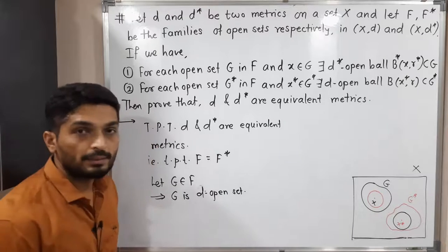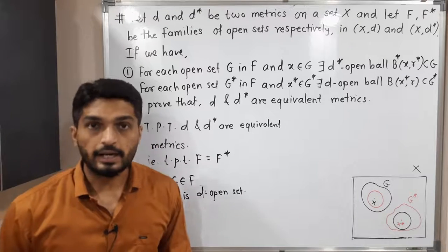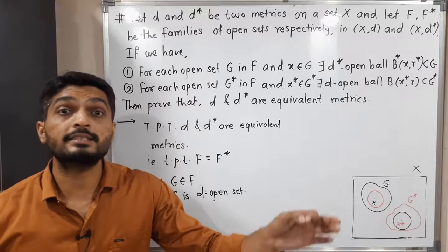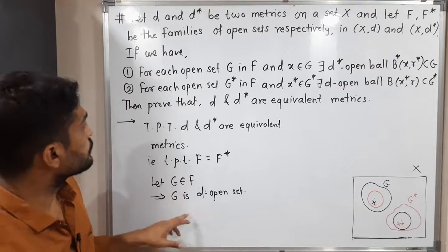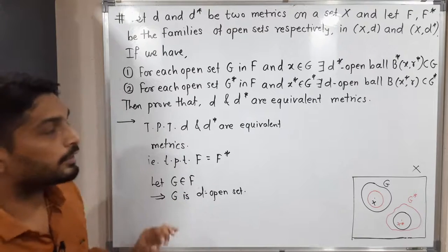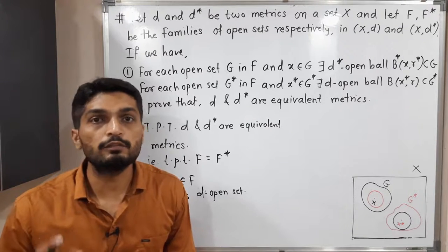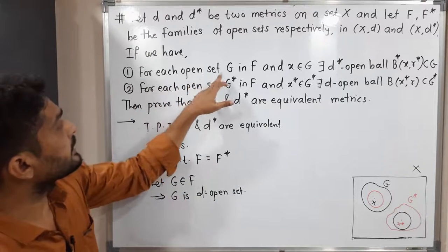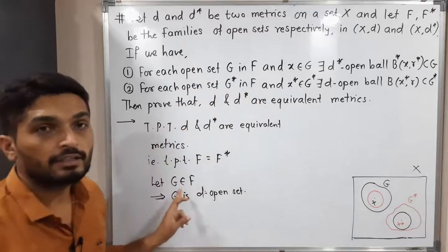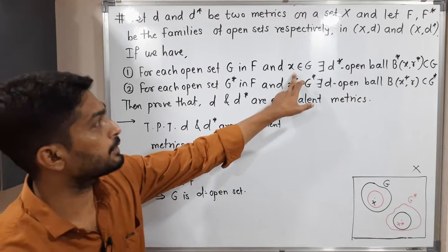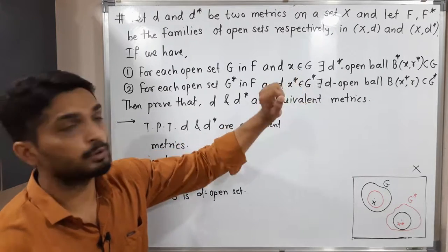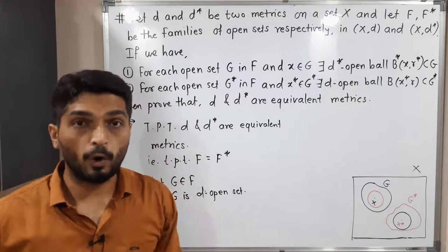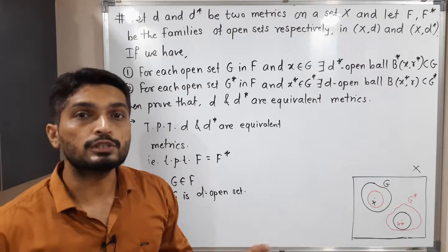G is a D-open set, meaning it is an open set in metric space (X, D). A D*-open set means a set which is open in metric space (X, D*). Now let us use the first information. The first information says: for open set G in F, for any x belonging to G, we can definitely find one D*-open ball with center at x which is a subset of G.